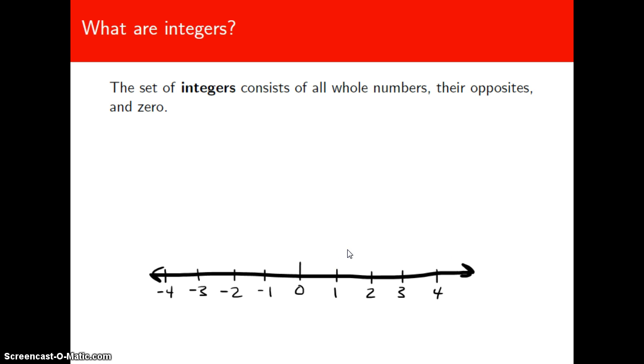The whole numbers are just the numbers you would count with. So starting at one, two, three, four, etc., forever in the direction of positive infinity. Those are the whole numbers.